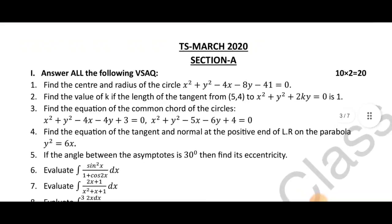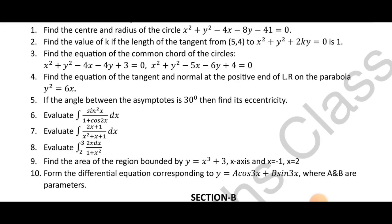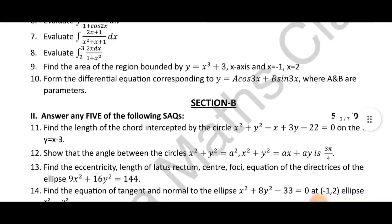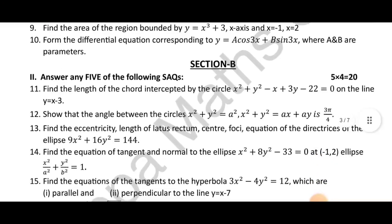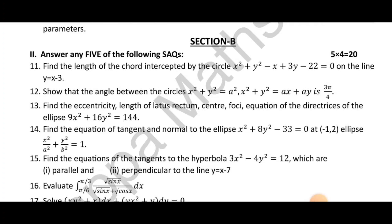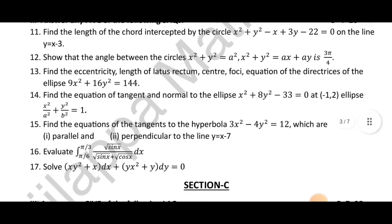Next is the March 2020 paper. Find the center and radius using the standard form of the equation. For the third question, if the standard form is not directly given, you need to find eccentricity, length of latus rectum, center, foci, and equation of directrix. Hyperbola is very important and very easy. Ellipse is perfect, hyperbola is easy — both use the same formula.